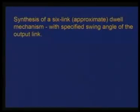In our last lecture, we explained the method of point position reduction for function generation and path generation by a 4R linkage. The same method is equally applicable for synthesizing slider crank mechanisms. Today, we shall demonstrate the application of this point position reduction towards synthesizing an approximate dual mechanism, which is a 6-link mechanism, with a specified swing angle of the output link.